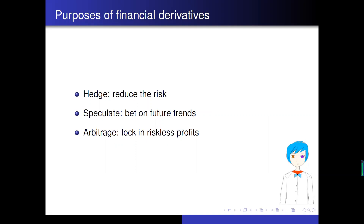The purpose of financial derivatives lies in three aspects. The first purpose is to hedge, which means that the holder of the financial derivative wants to reduce the risk. The second purpose is to speculate, which means the holder wants to bet on future trends. The last one is to arbitrage, which means the holder wants to lock in riskless profits.